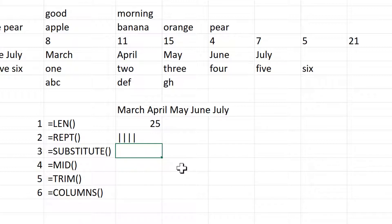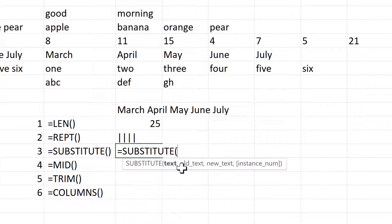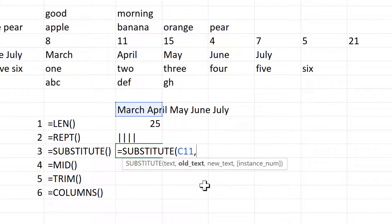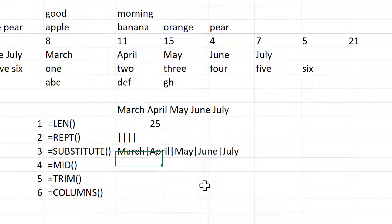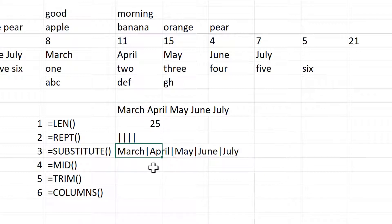Then the SUBSTITUTE formula will let you substitute one piece of text for another. So if I select this text here, the text I'm going to replace is going to be a space — that needs to be in quotation marks — and then what I'm going to replace it with will be a pipe symbol. It takes all of these spaces in this text string and replaces them all with pipe symbols.